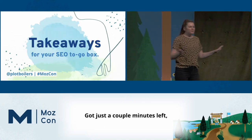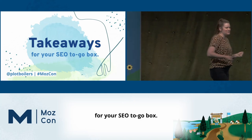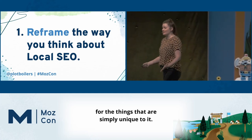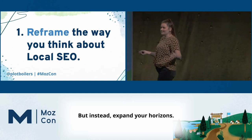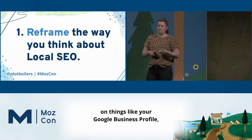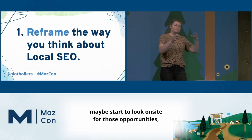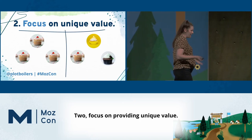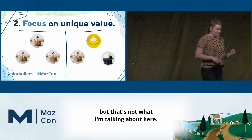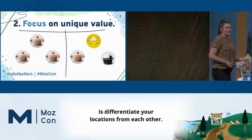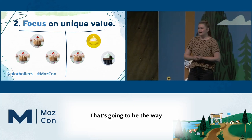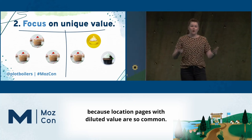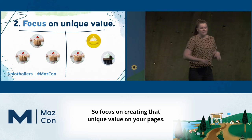Takeaways. Number one: reframe the way you think about local SEO. Do not mistake local SEO as an entirety for the things that are simply unique to it. Expand your horizons — if you're focused largely off-site on things like your Google Business Profile, directories, or local backlinks, maybe start to look on-site for those opportunities like structured data and content. Number two: focus on providing unique value. Differentiate your locations from each other — that's going to be the way you actually differentiate yourself from competitors, because location pages with diluted value are so common.